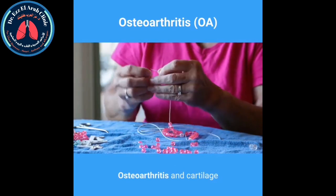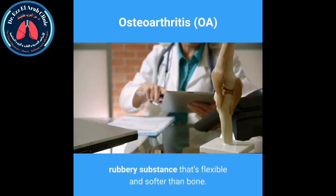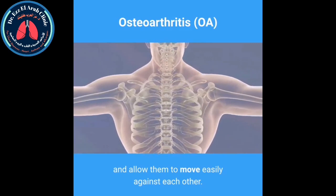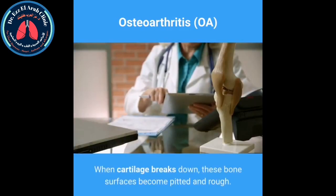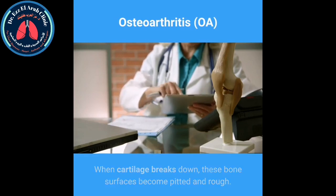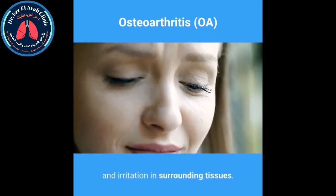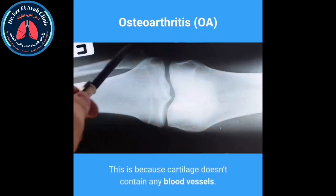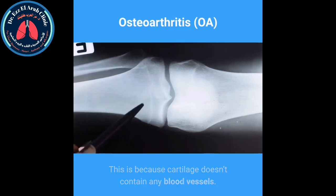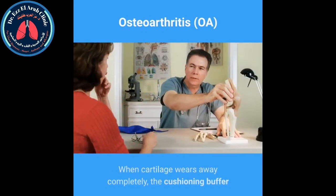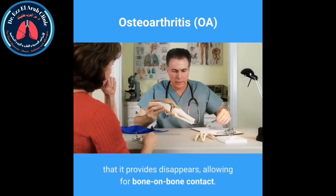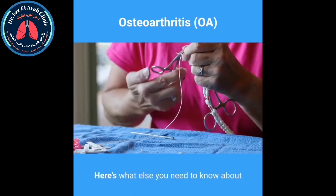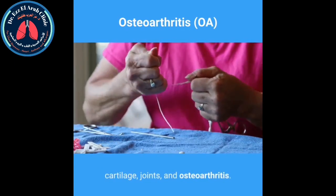Osteoarthritis and cartilage. Cartilage is a tough, rubbery substance that is flexible and softer than bone. Its job is to protect the ends of bones within a joint and allow them to move easily against each other. When cartilage breaks down, these bone surfaces become pitted and rough, causing pain and irritation in surrounding tissues. Damaged cartilage cannot repair itself because it contains no blood vessels. When cartilage wears away completely, the cushioning buffer disappears, allowing bone-on-bone contact — causing intense pain and other OA symptoms.